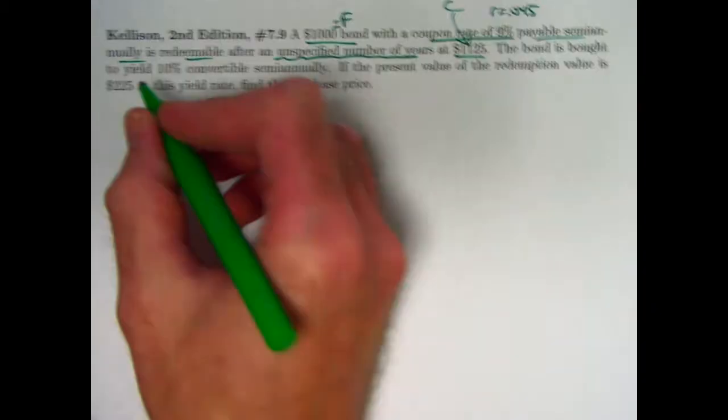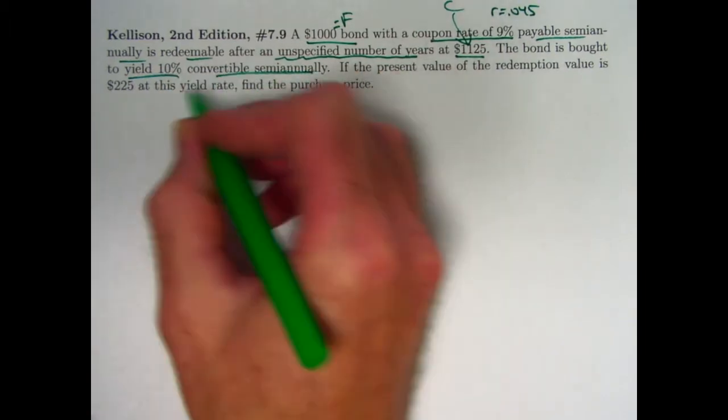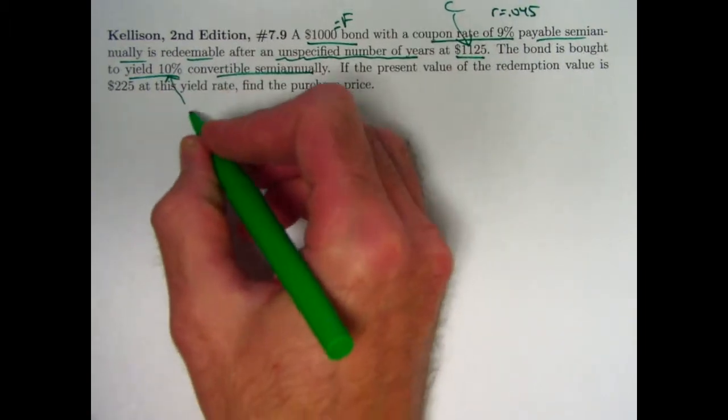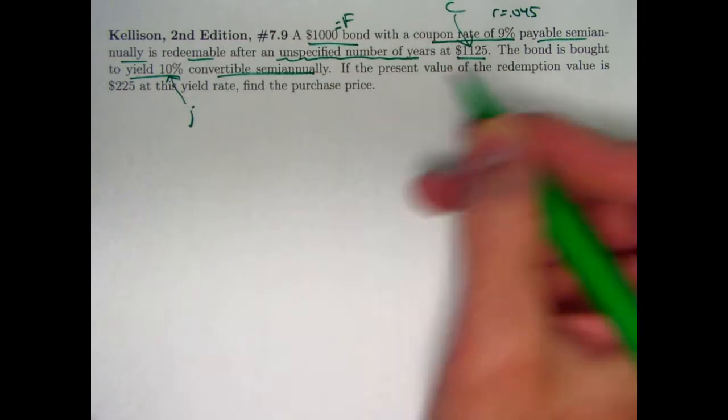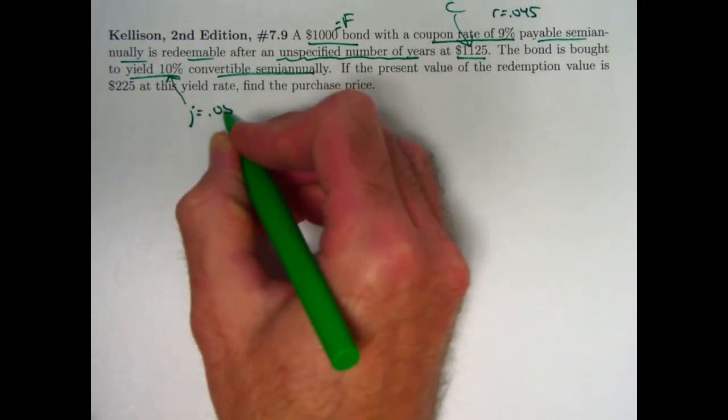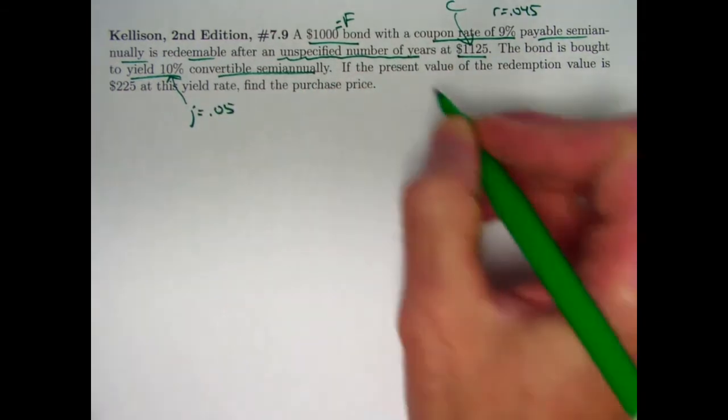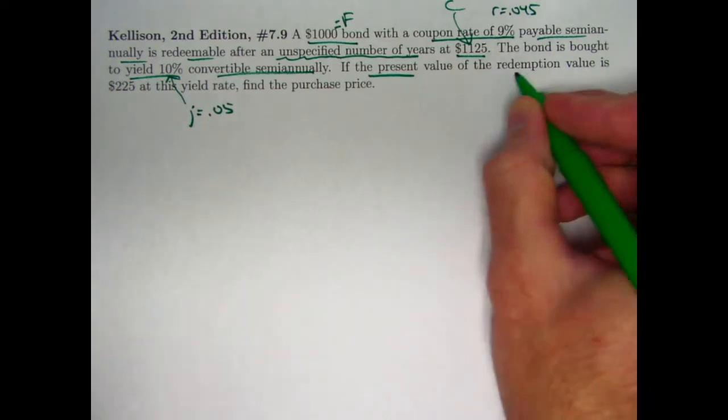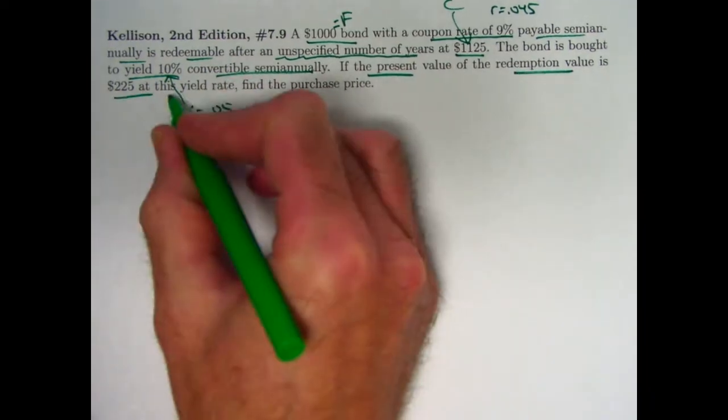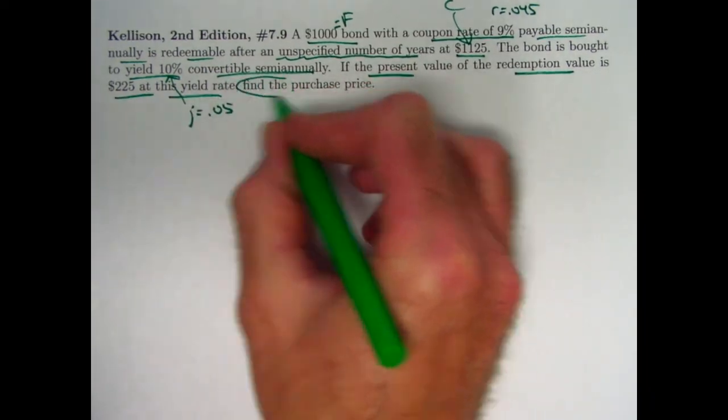The bond is bought to yield 10% convertible semi-annually. So J, the yield rate, or I if you prefer, would be 0.05. If the present value of the redemption value is $225 at this yield rate, find the purchase price, P.